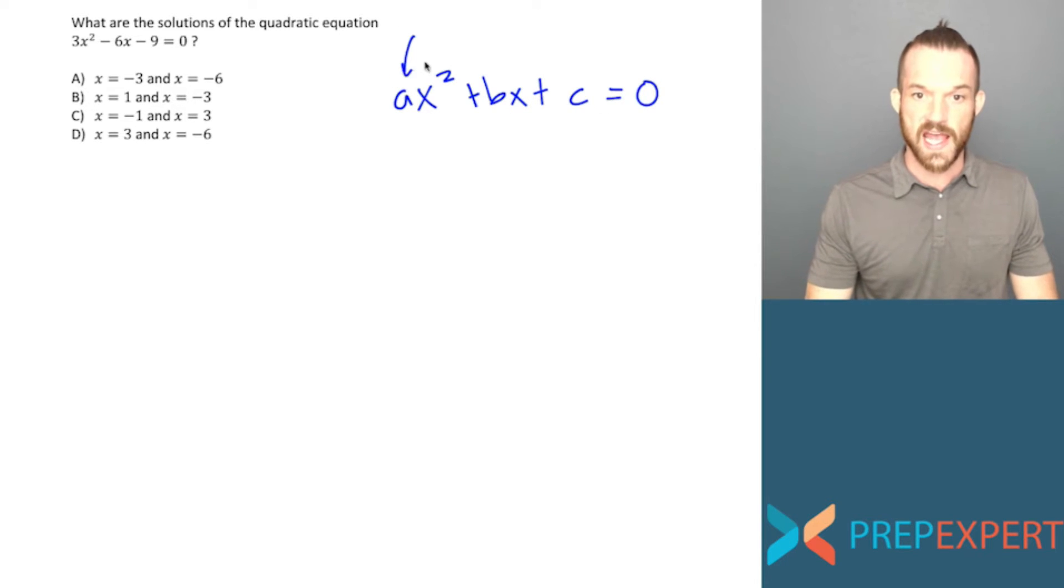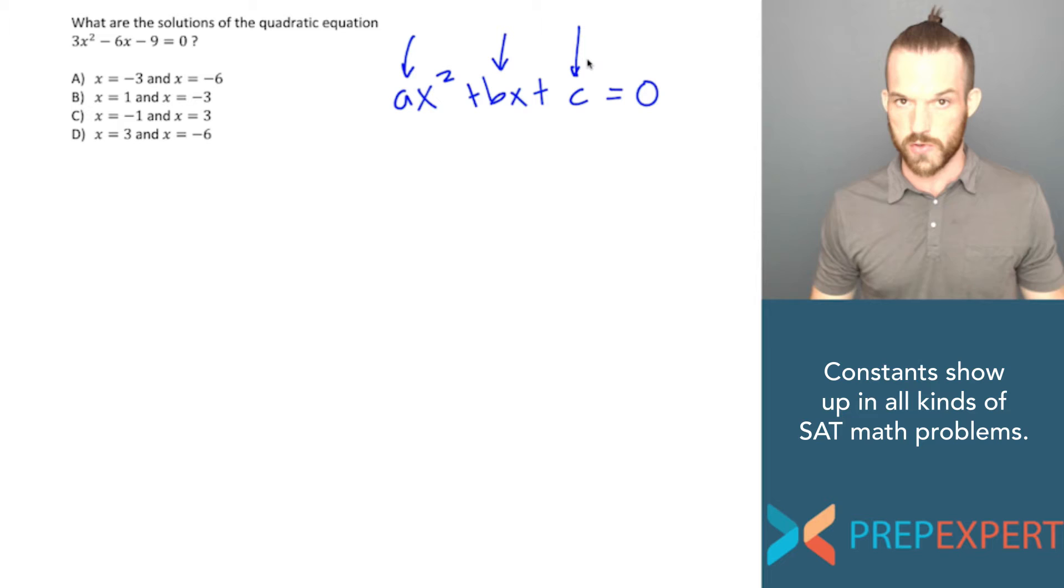And when a quadratic is in this form, a, b, and c are all constants, which means they're not actually variables, they're numbers. They're just unknown numbers. So a number that we know is a number, but we don't know what number it is, we call that a constant because it's not a variable. It can't change and become other numbers. So a, b, and c are all constants when the quadratic is in the standard form of a quadratic equation.